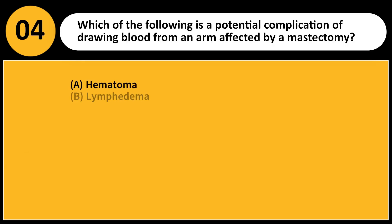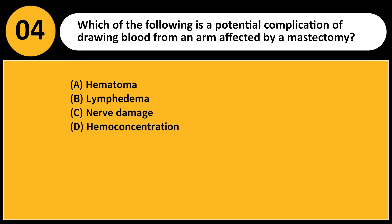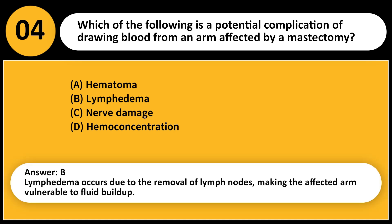Which of the following is a potential complication of drawing blood from an arm affected by a mastectomy? A. Hematoma. B. Lymphedema. C. Nerve damage. D. Hemoconcentration. Answer: B. Lymphedema occurs due to the removal of lymph nodes, making the affected arm vulnerable to fluid buildup.